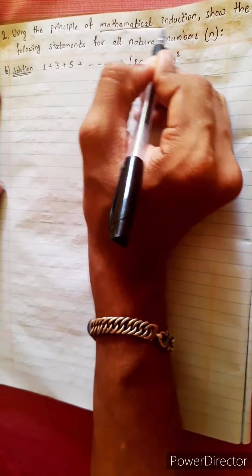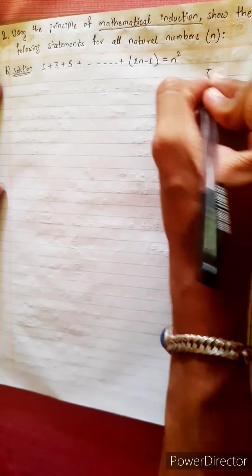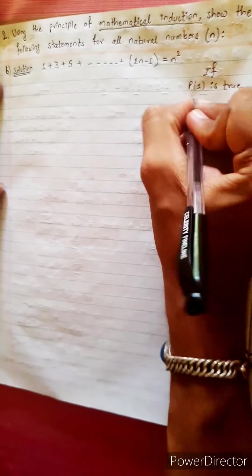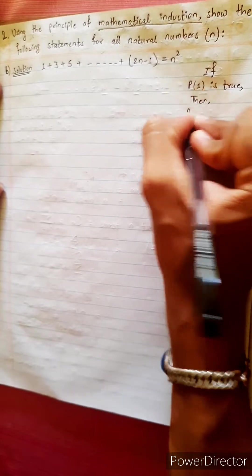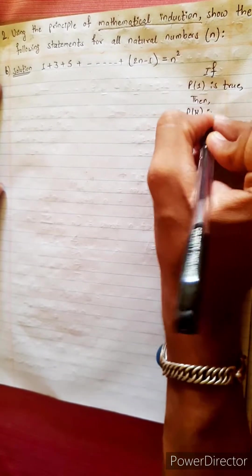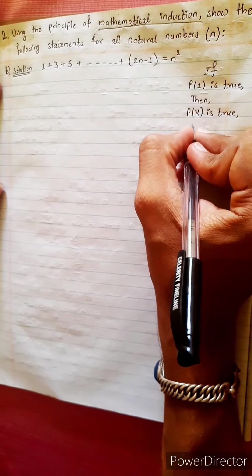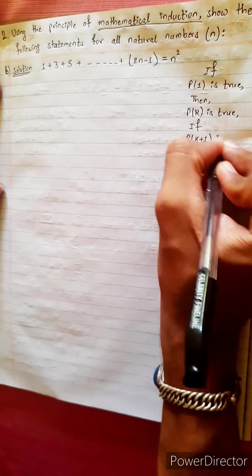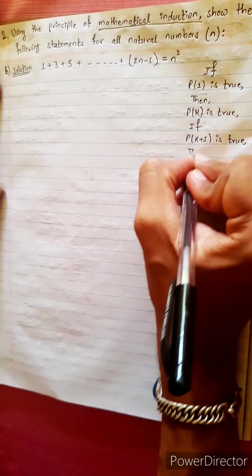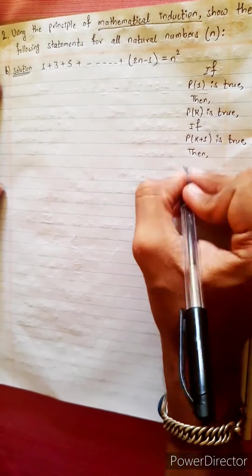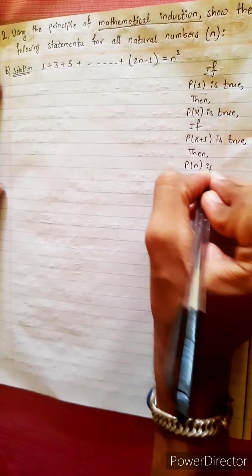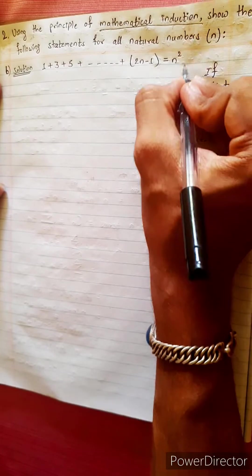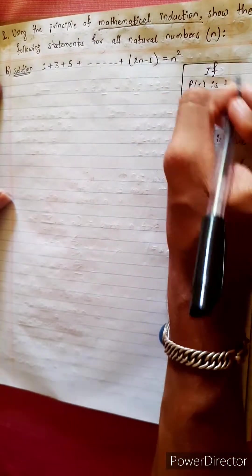Using the Principle of Mathematical Induction. Mathematical Induction is basic: P1 is true, then Pk is true. If Pk plus 1 is true, then Pn is true for all. So this is true — we will prove it.